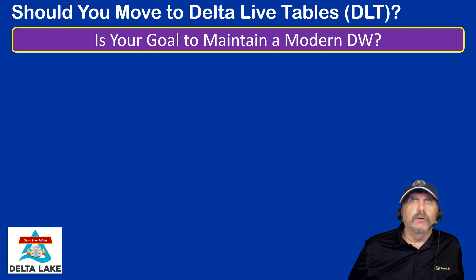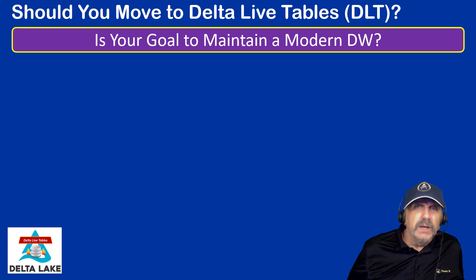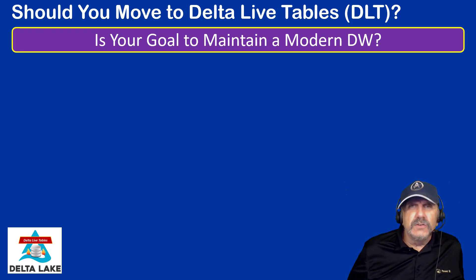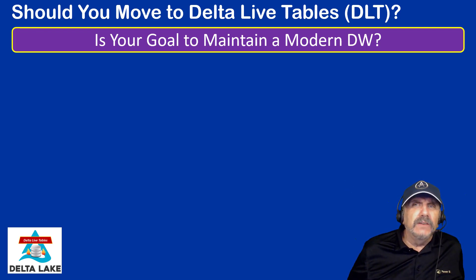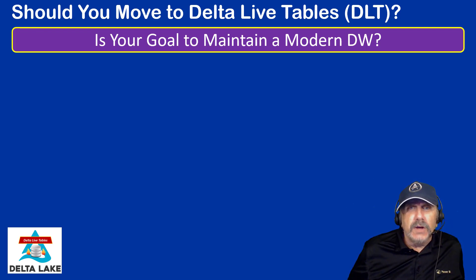The other type of data — video, audio, images — those are unstructured and probably not well-suited to Delta Live Tables. I haven't seen any examples that address that use case. And under the covers, we're talking about Delta tables, which are structured data.